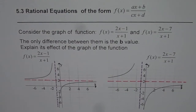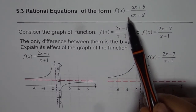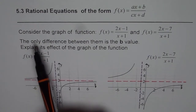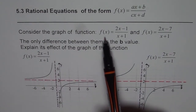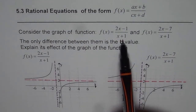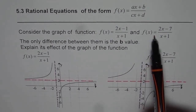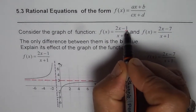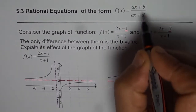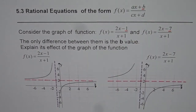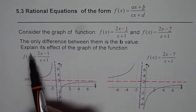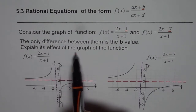I'm Anil Kumar and in this video we are going to explore the rational equation of the form f of x equals to ax plus b divided by cx plus d. The question here is: consider the graph of the function f of x equals to 2x minus 1 over x plus 1 and f of x equals to 2x minus 7 divided by x plus 1. The only difference between them is the b value. Explain its effect on the graph of the function.